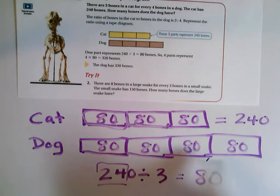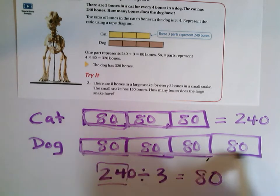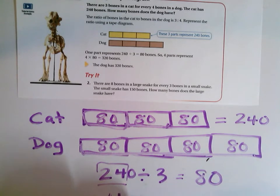All right, so all of these little pieces are 80. So to find out what the dog is, the dog has four parts. So I'm going to do four times 80 to find out the dog.